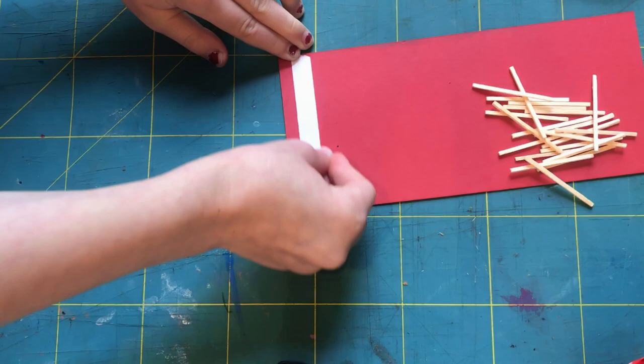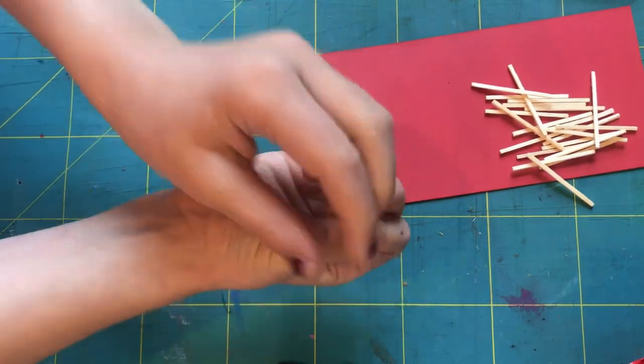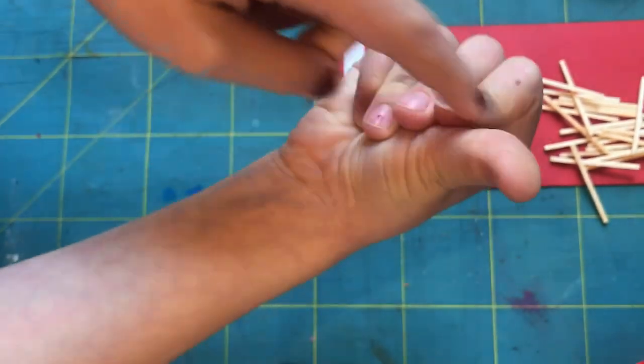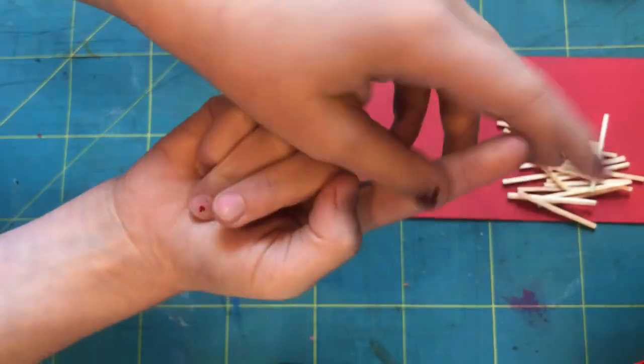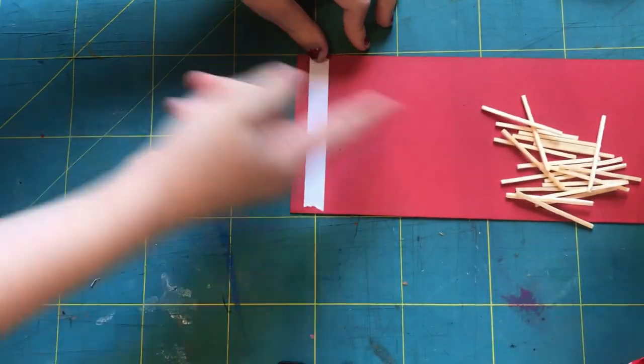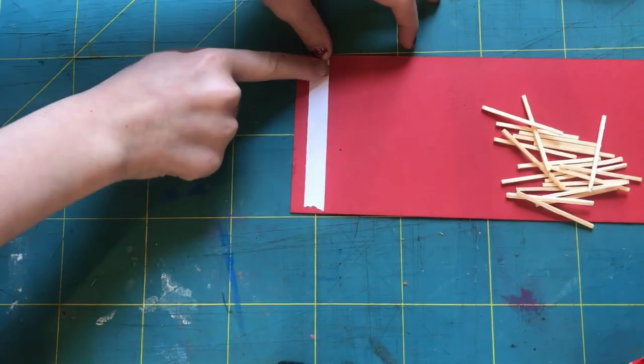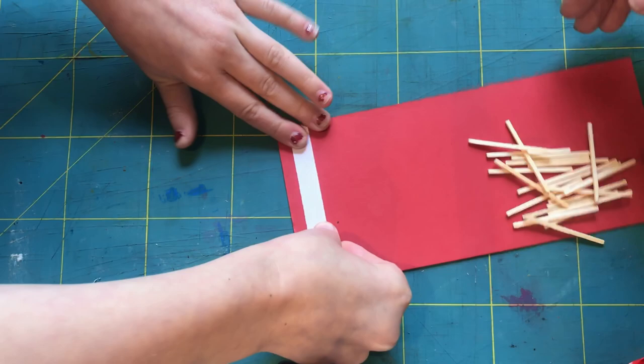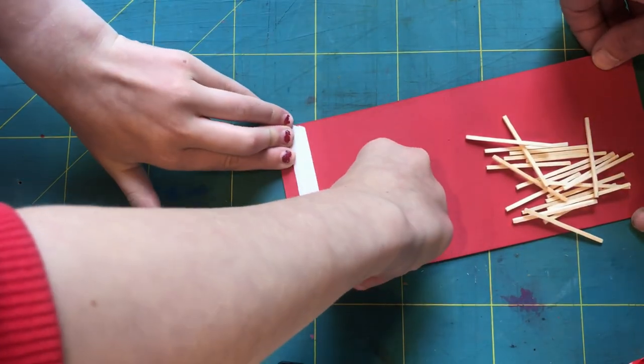What's this called? Thumb? No, what's this bit called? The finger pad? You know what I mean. Okay, brilliant. So you're making sure the bottom bit is stuck really well. Now this is the clever bit with double-sided tape.